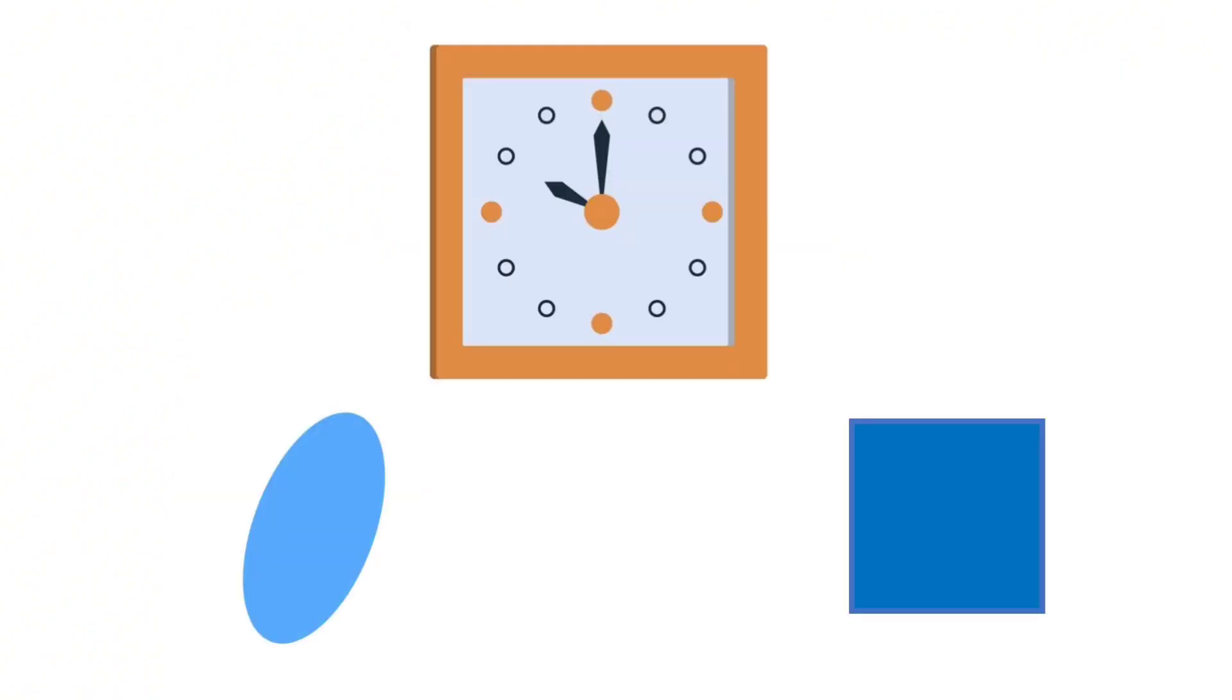Now next we have this. Can you guess its shape? Which shape is this? Is it an oval or is it a square? This is a square. Good job.